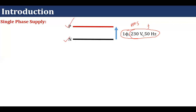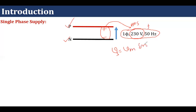How does this RMS value come? It is measured at phase with respect to neutral, and when this measurement is done, it will be equal to 230 volts RMS. If we try to write the mathematical equation of this voltage, the nature of this voltage is sinusoidal. A generalized form of this equation will be Vs = Vm sin(ωt). Since we know the RMS value, we can easily find the amplitude: it will be equal to 230√2 sin(100πt).